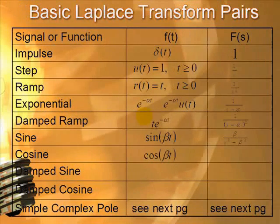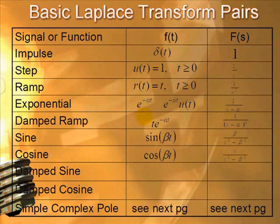Likewise, for cosine, we just have an s in the numerator and the same denominator as the sine, s squared plus beta squared.